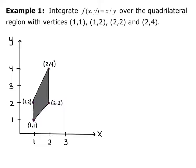Now, what I need to do is find bounds for y and bounds for x. To find my bounds for y, I need to find the equations of the top line and the bottom line of the quadrilateral region. For the top line, the slope is (4 minus 2) over (2 minus 1), which equals 2. Using point-slope form, y minus 2 equals 2 times (x minus 1), so y equals 2x. The upper bound for y is going to be 2x.